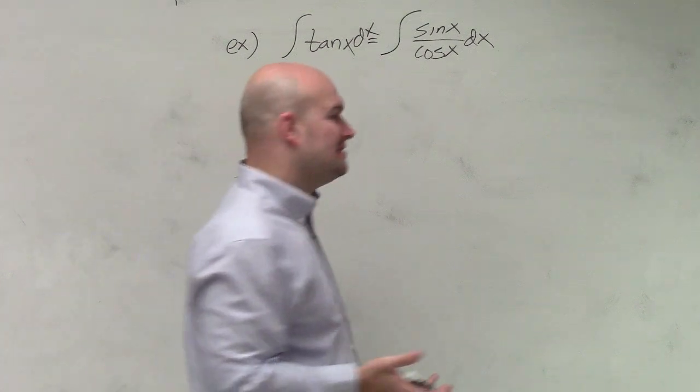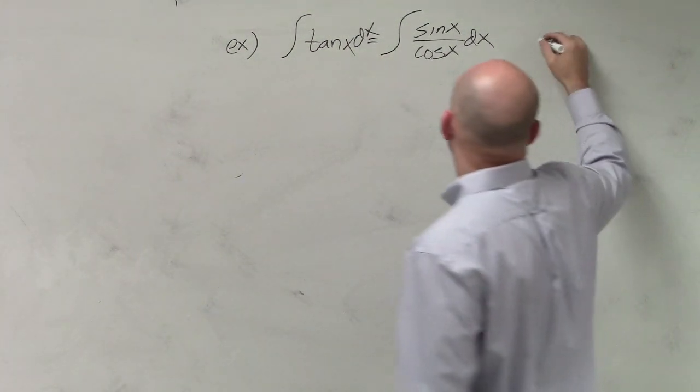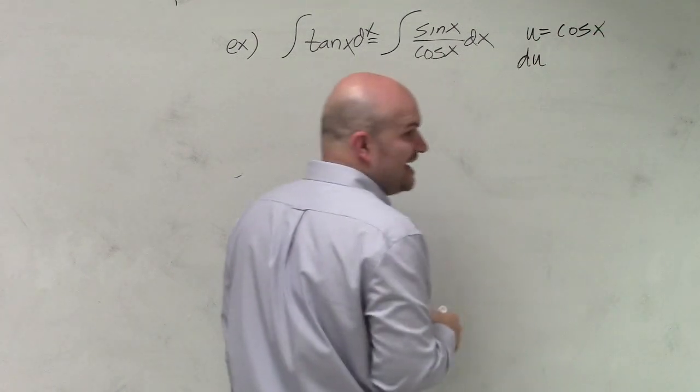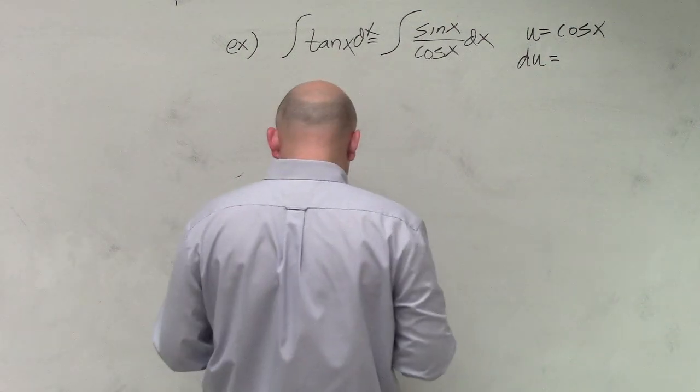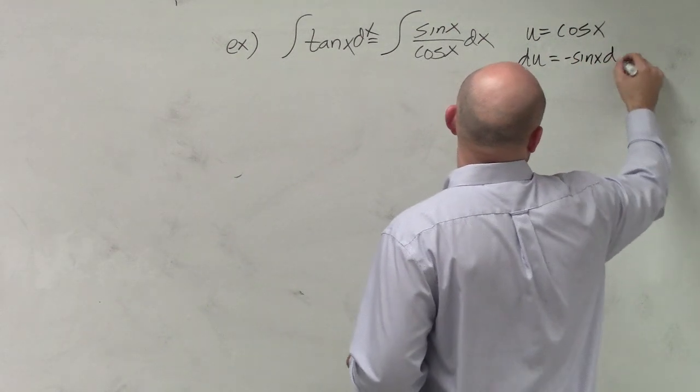Then I could say, well, how about I make u equal to cosine of x. Therefore, du/dx is going to be negative sine of x dx.